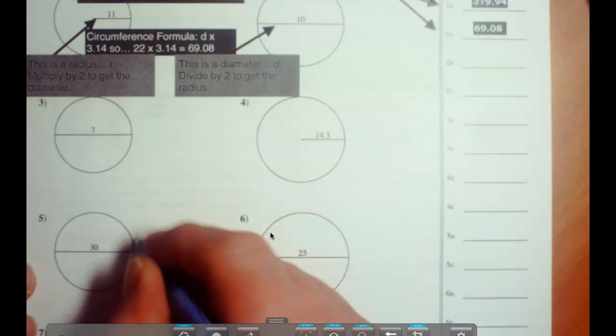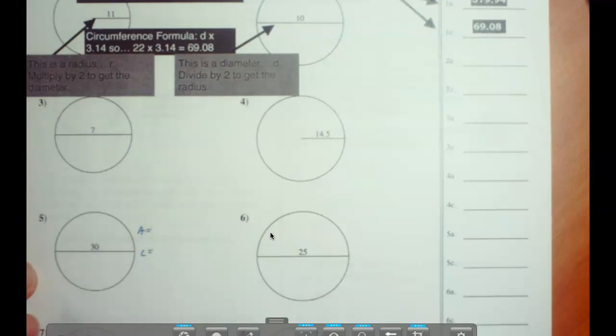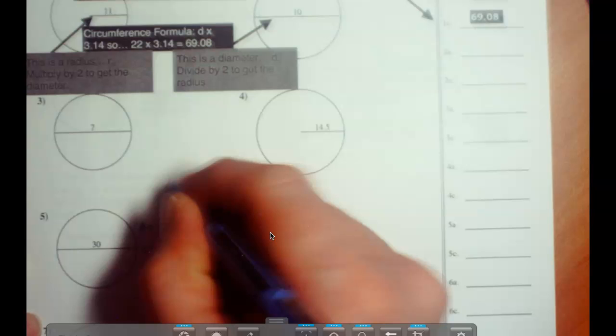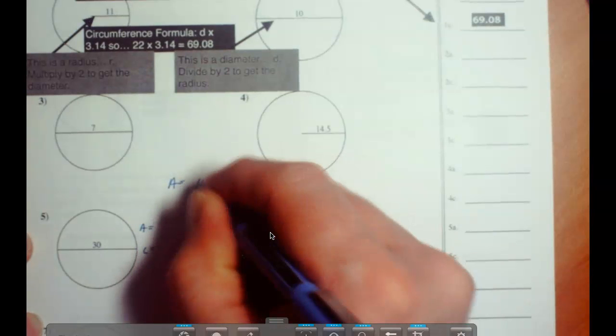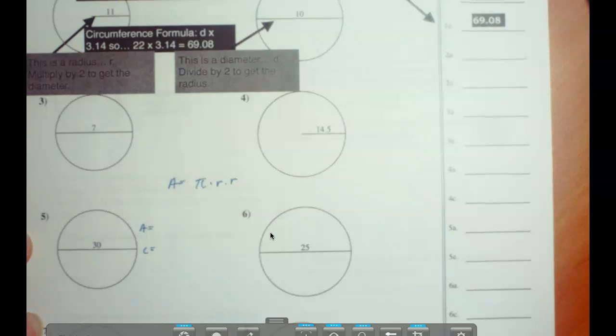First of all we need to find what the area is equal to and then what the circumference is equal to. Well here are the two formulas. The area is going to be equal to, I'll write A equals, area is equal to pi r r, pi times r times r.